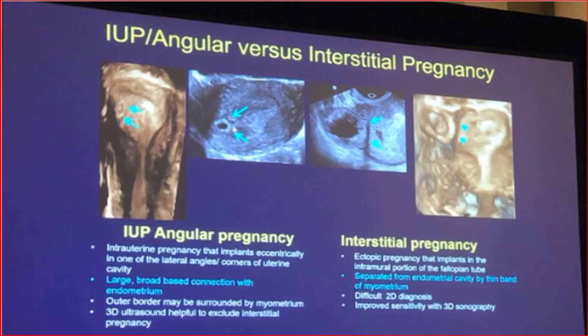Third, the interstitial line sign: an echogenic line extending into the uterine horn, bordering the margin of the gestational sac present in the fallopian tube. This picture shows the difference between intrauterine angular pregnancy versus ectopic interstitial pregnancy. Angular pregnancy is an intrauterine pregnancy implanted eccentrically in one of the lateral angles or corners of the uterine cavity, with a large broad-based connection with the endometrium; the outer border may be surrounded by myometrium.